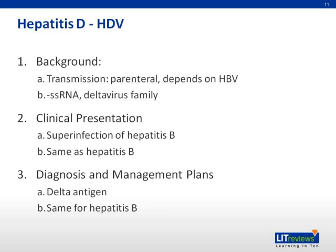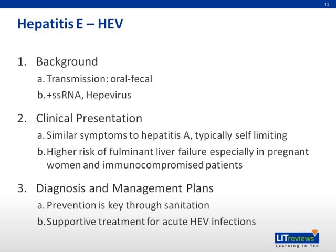Moving on to hepatitis D, which is transmitted parenterally and depends on HBV, as HDV is a superinfection of hepatitis B. It is a negative single-stranded RNA virus, part of the delta virus family. Clinical symptoms and management are the same as hepatitis B, and patients are diagnosed via the delta antigen. Hepatitis E is transmitted fecal-orally and is a positive single-stranded RNA virus of the hepevirus family. It presents similarly to hepatitis A and is typically self-limiting, but carries a higher risk of fulminant liver failure, especially in pregnant women and immunocompromised patients. Prevention through proper sanitation is key, and supportive treatment is the best available option for acute infections.